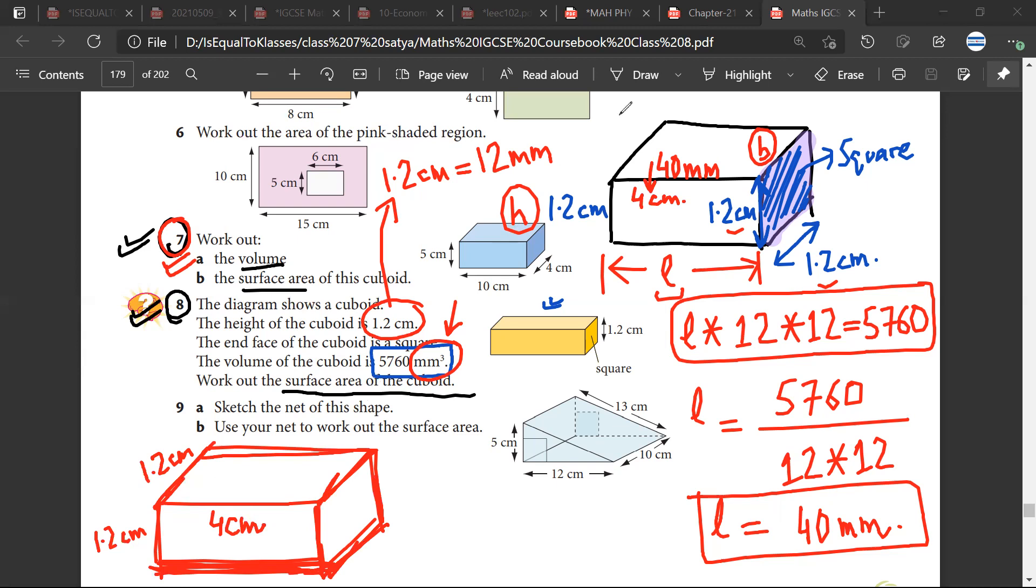And finally when I have to find the surface area, I will be using the same formula. Twice of lb. Now let me consider this to be L, this to be H, this to be B. So if I want lb, lb would be 4 into 1.2, plus bh, this will be 1.2 into 1.2, plus hl. hl would be 1.2 into L. And I can calculate this and I will have the final answer.